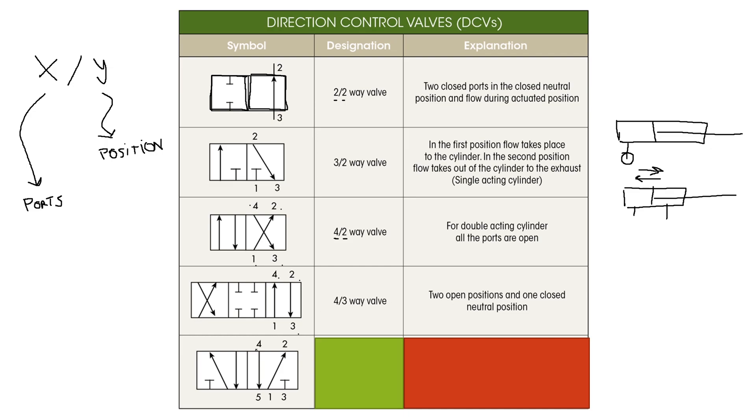And the last one has two open positions with two exhaust ports. Let's count the ports. So we have one, two, three, four, five ports and two positions, making this a 5/2 way valve.